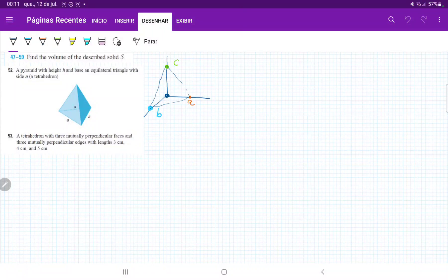So for number 53, they want us to find a volume of a tetrahedron with three mutually perpendicular faces and three mutually perpendicular edges with length 3, 4, and 5.